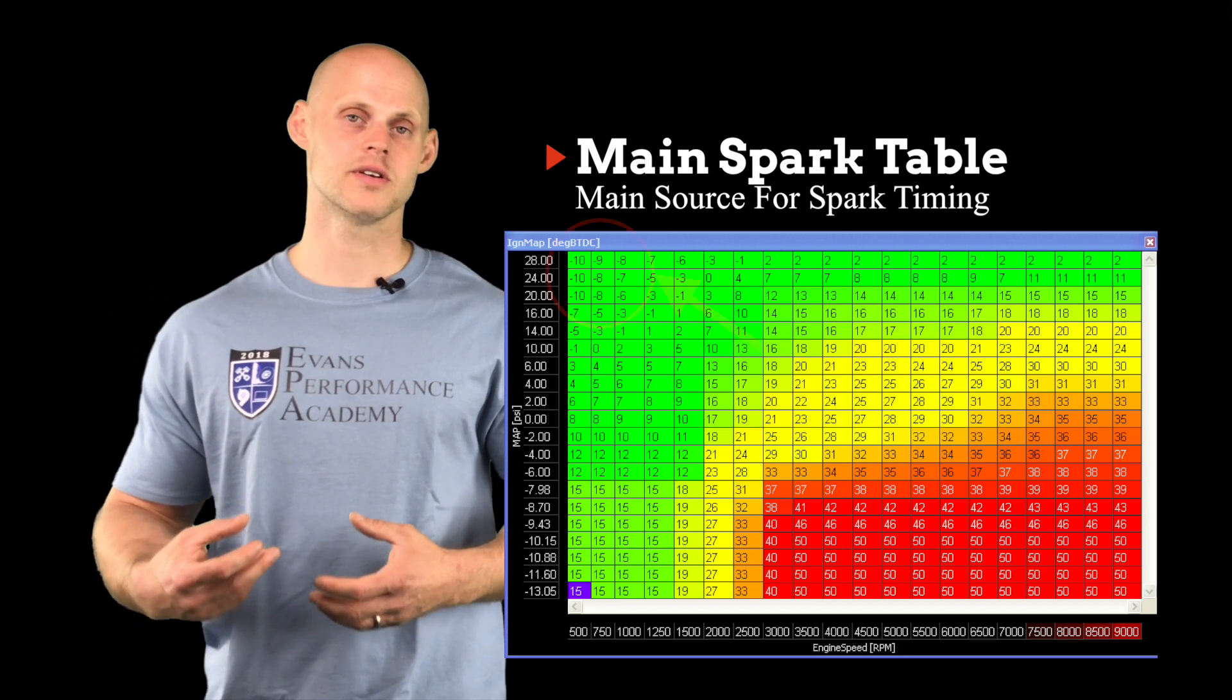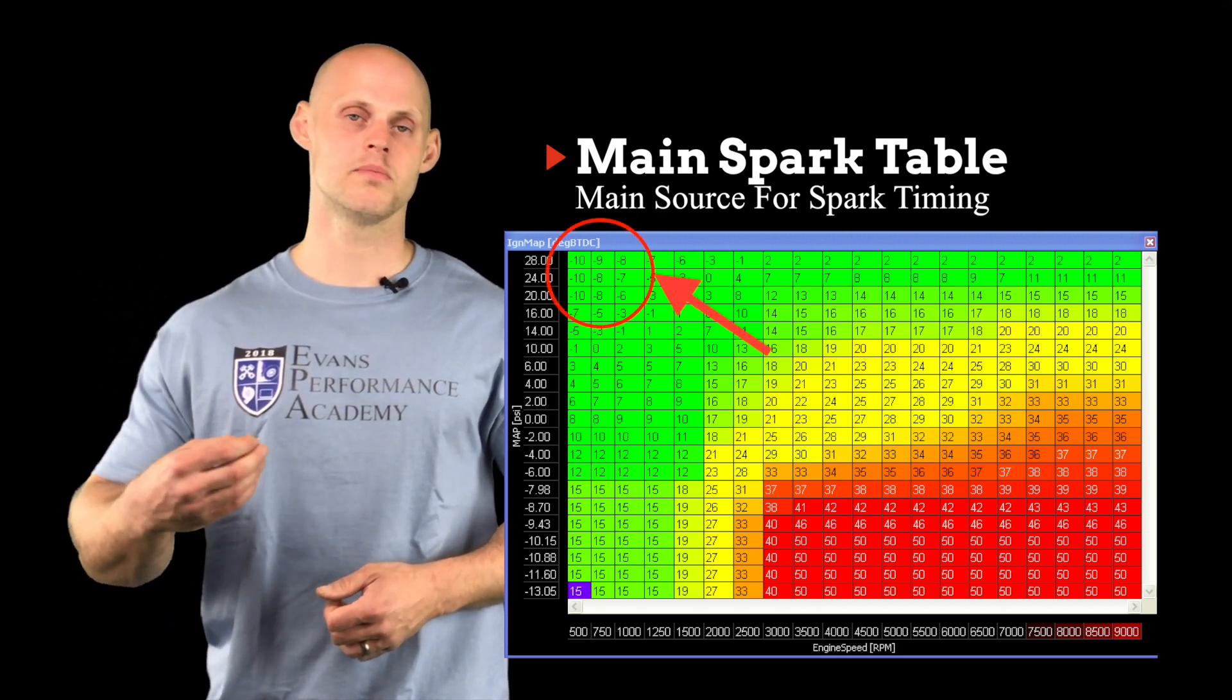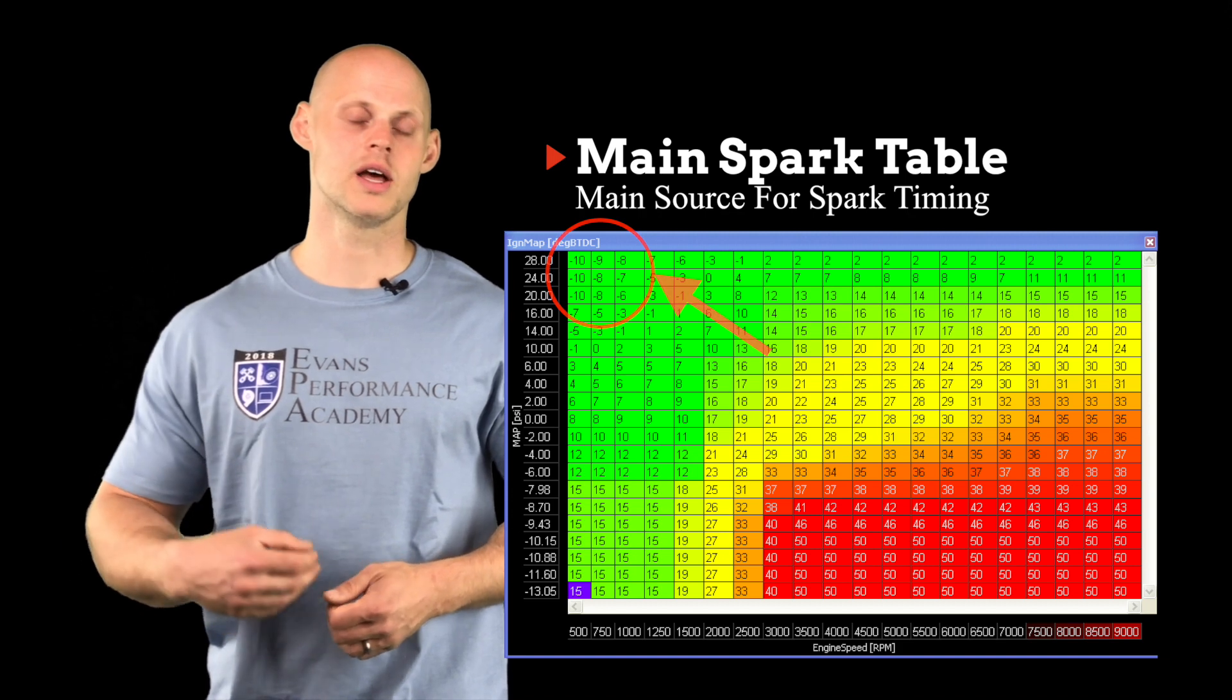If we have a negative value in this table, it represents firing our spark plug on the power or combustion stroke. That's going to be late timing.